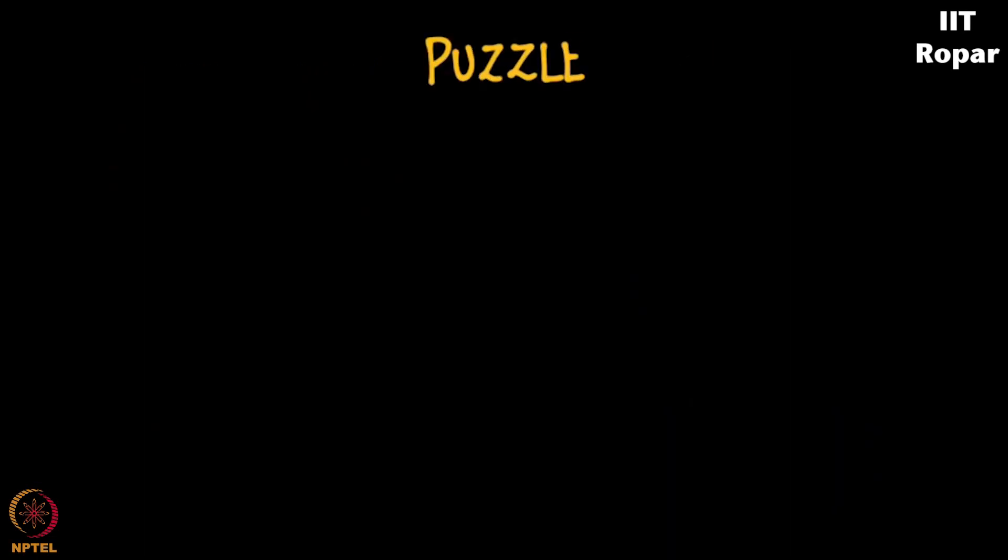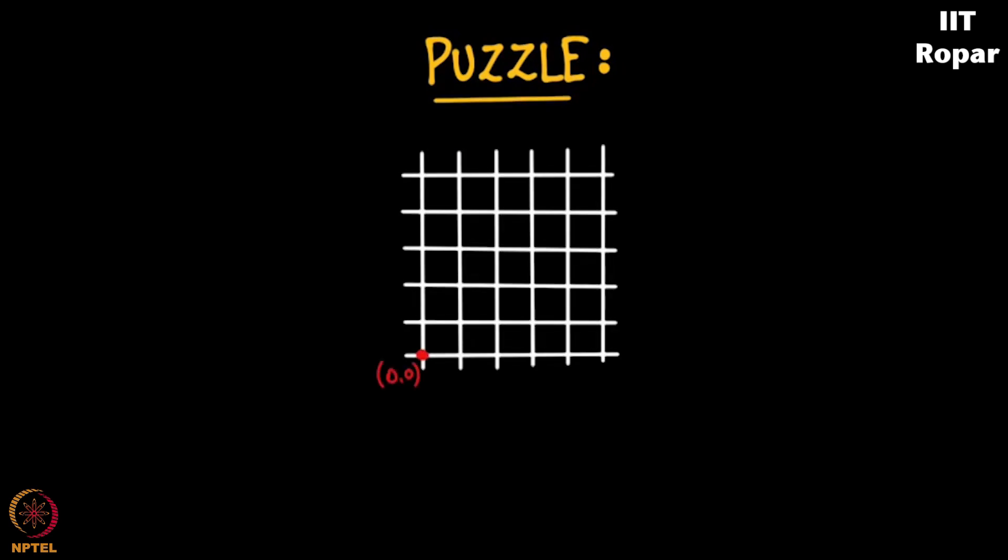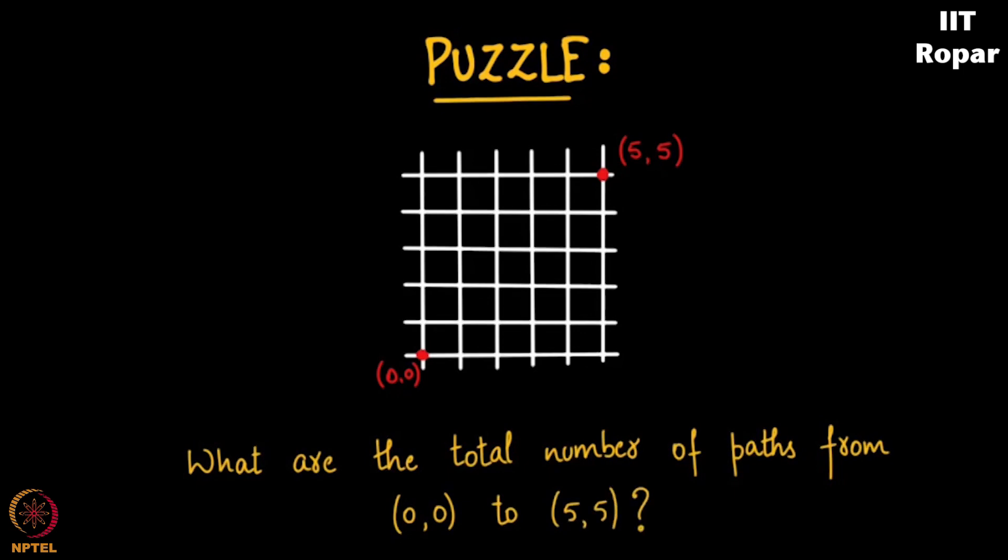Let me ask you a puzzle here. If I start from this point 0,0 and if I have to reach this point 5,5, in how many ways can I reach there? What are the total number of paths that I can take from 0,0 to reach 5,5?